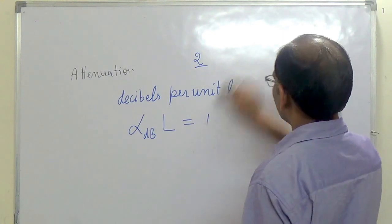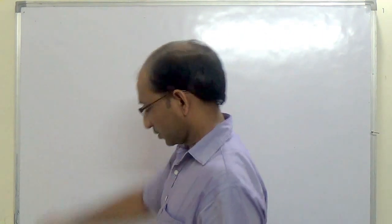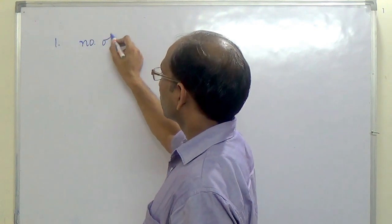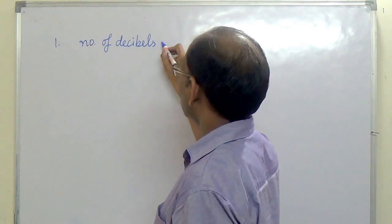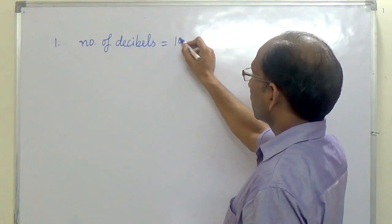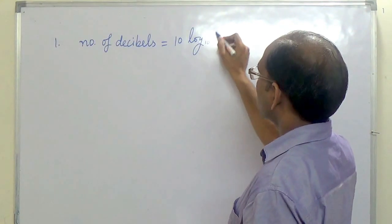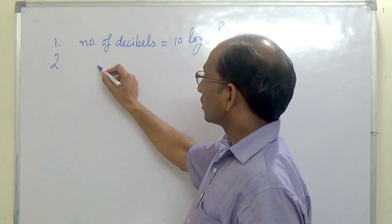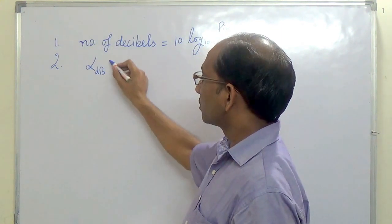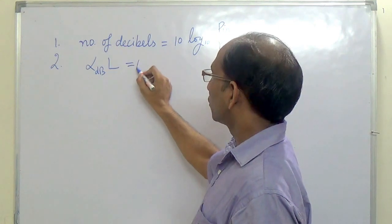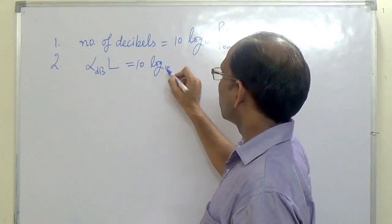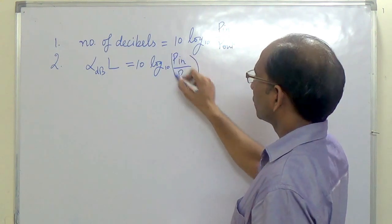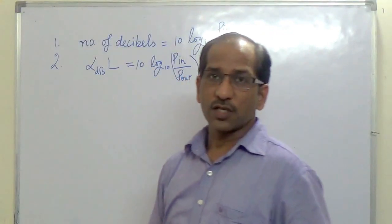We have these two basic formulas for attenuation. Number one: number of decibels is equal to 10 log at base 10 of P_input upon P_output. The second formula is: α_dB multiplied by L is equal to 10 log at base 10 of P_input upon P_output. These are the two basic formulas for attenuation.